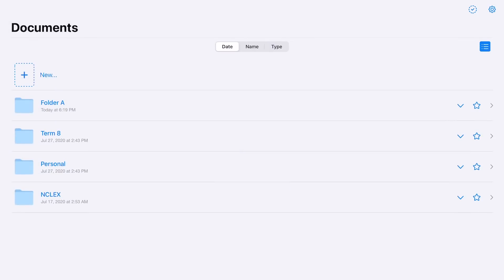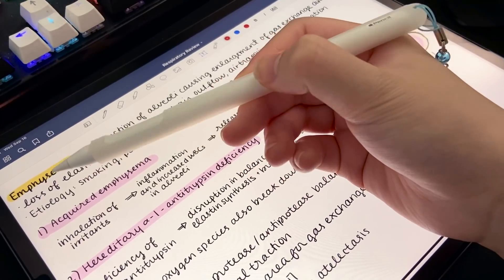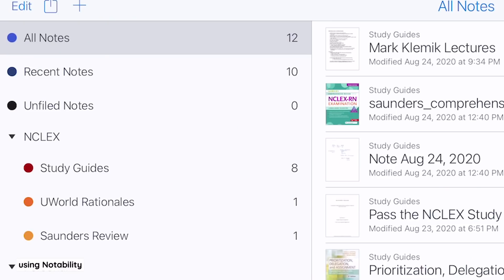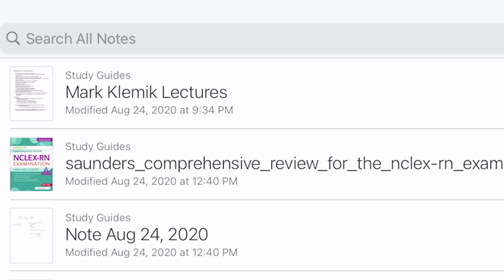Seriously, honestly, what is even the point of having a touch keyboard anymore? Similarly, Scribble works in Notability, again, in any text field, so you can use it to name new dividers and subjects, and you can also use it for searching.